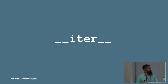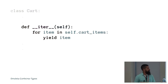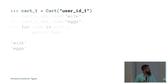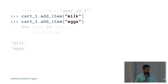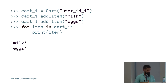If you want to iterate over your container, you implement dunder iter. The dunder iter magic method should return an iterator object for the container — for a sequence it iterates over the objects, for a mapping it goes over the keys. Here I'm simply going over all the keys in self.cart_items, which is a dictionary, and yielding them one by one. With this implementation I can create a new cart, add a couple of items, and iterate over the cart object itself — printing it out shows milk and eggs.